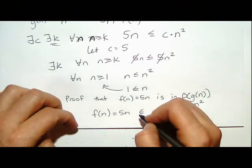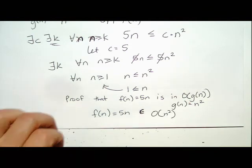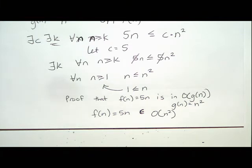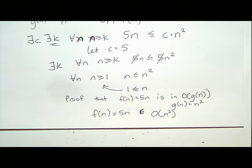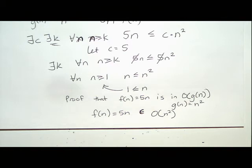Big O is actually a set — a set defined by a function. It's the set of all functions that are less than or equal to a constant times the function in the parentheses. So the set Big O of n squared includes things like 10n squared, 100n squared, n squared plus n, n squared plus 7, and even much smaller things like the function f(n)=2, 5n, or 5n plus 10. But it does NOT include n cubed, because n cubed grows faster than n squared — a constant times n squared can never be an upper bound for n cubed.